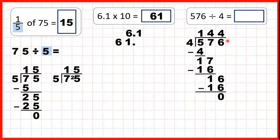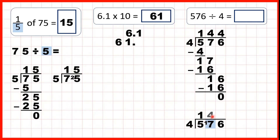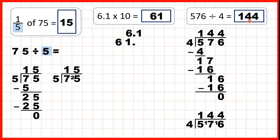We could also use short division here. So, 5 divided by 4 is 1 remainder 1. 17 divided by 4 is 4 remainder 1, because 4 times 4 is 16, and then one more is 17. And then, 16 divided by 4 is 4. So, our answer is 144.